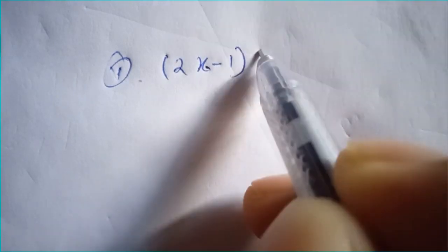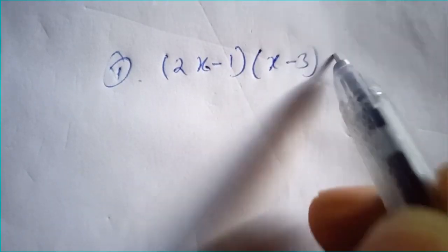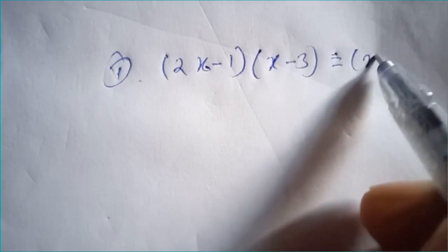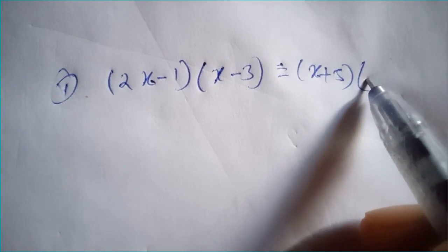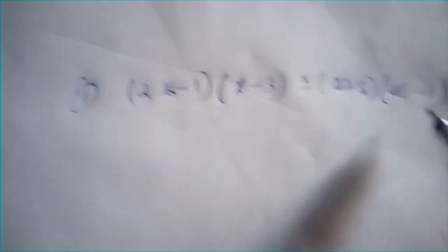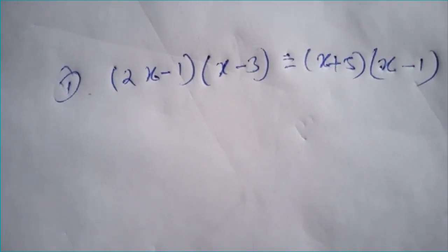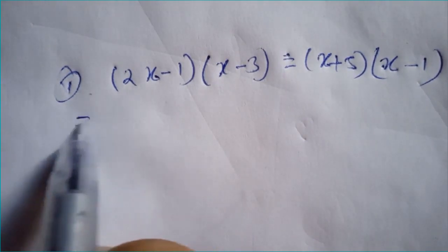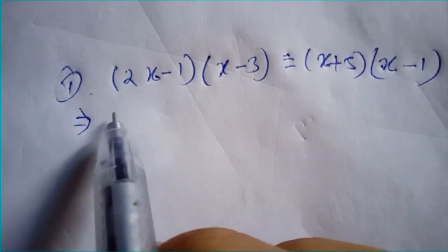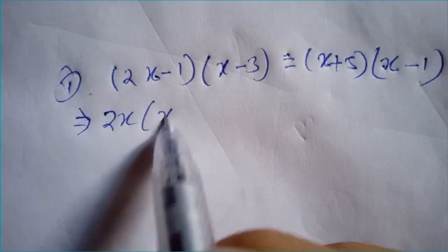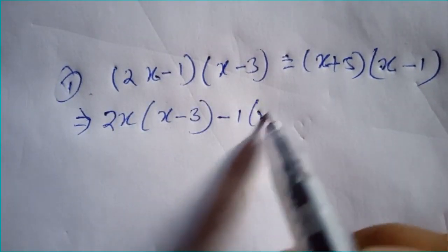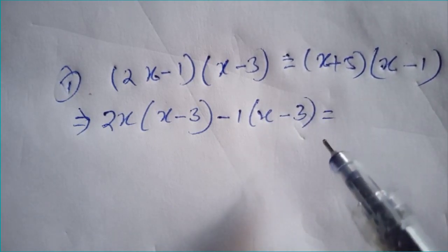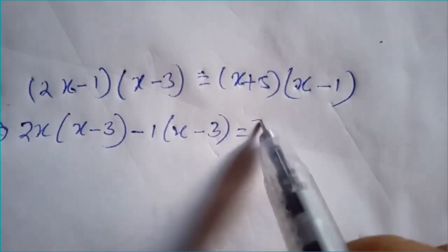Starting with the first problem: (2x - 1)(x - 3) equals (x + 5)(x - 1). We need to remember that we will multiply out both sides. This equals 2x times (x - 3) minus 1 times (x - 3) on the left side.